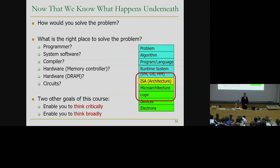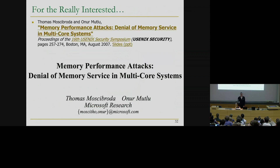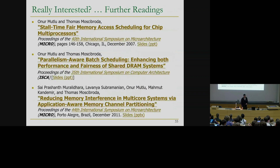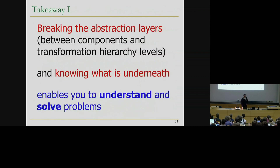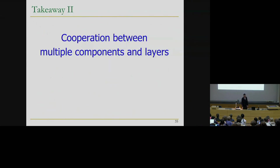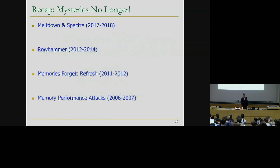The two goals of this course, as Professor Mutlu mentioned, are to enable you to think critically to find solutions to problems in computer architecture, and to enable you to think broadly. For those who are interested, this is the paper that discusses the memory performance attacks problem - you can go and read that, and there are even more references. The takeaway is that knowing what is going on underneath can help you understand and solve the problems, and the cooperation between multiple components and layers can enable more effective solutions and systems. Those were the four mysteries we covered so far.